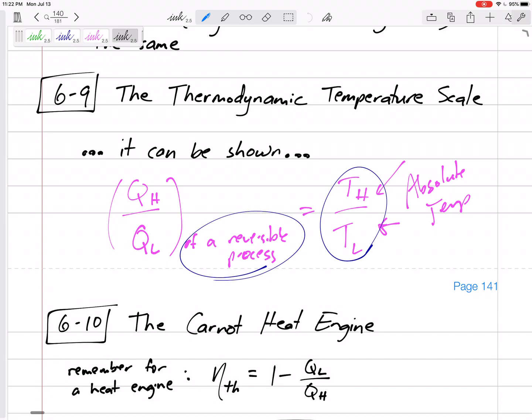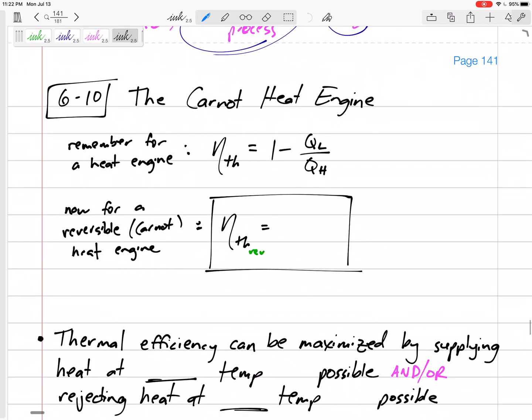Let's go back to heat engines. The thermal efficiency for a heat engine, one of the equations, was one minus QL over QH. So for a reversible Carnot heat engine, an ideal heat engine, the very best heat engine we can get, the thermal efficiency of a reversible heat engine is one minus TL over TH. Those T's have to be absolute temperatures of the source and the sink.